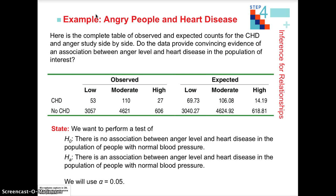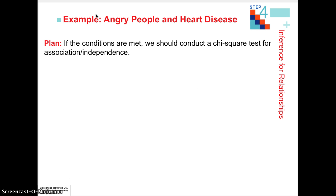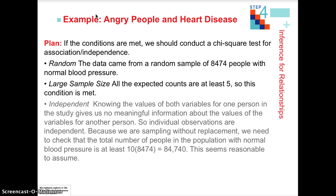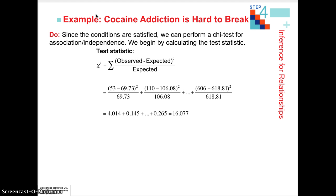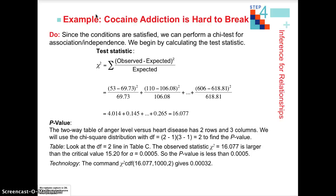In state, we give our two hypotheses, our alpha level, and the parameter of interest. In plan, we check conditions. In do, we expand the chi-square: the first component, the second, dot dot dot, and the last — we only had six to calculate. We end up with a chi-square test statistic of a little over 16. After calculating degrees of freedom, we use the calculator or table to find a p-value of 0.00032.